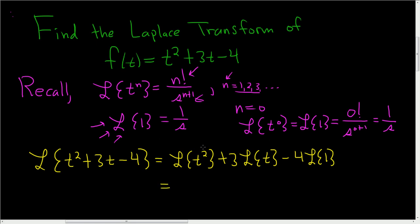So for the first piece, n is equal to 2, so we get 2 factorial. And then on the bottom, it's just always 1 higher, so s cubed plus 3.